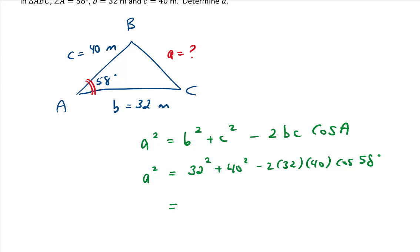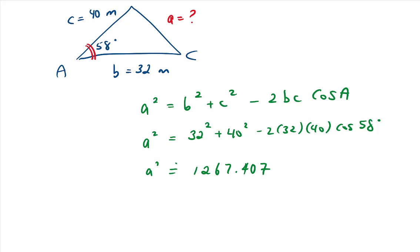So using your calculator, let's determine what a² is equal to. We see that a² is approximately equal to 1,267.407. And therefore, if we want to find the value of a, since this is a², we are going to square root both sides of this equation. And we get that a is approximately 35.6 meters. And now we found the length of that third side. So this is the way to use the cosine law to find a side length.